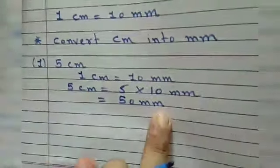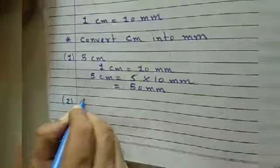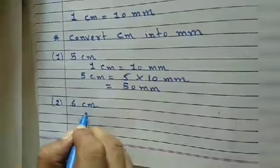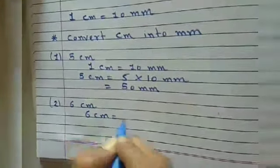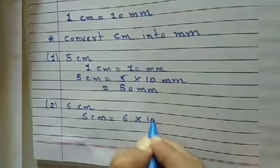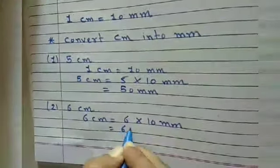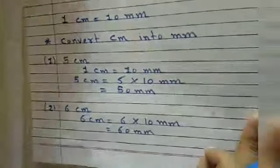Now one more example: 6 centimeters. To convert, 6 centimeters equals 6 multiplied by 10 millimeters, which equals 60 millimeters.